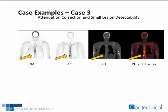On this slide, we see another example of small lesion detectability improvements using CT attenuation correction. On the left is the non-attenuation corrected image labeled NAC, and the attenuation corrected image labeled AC is to the right. In this example, we also see the CT scan along with the fusion image.